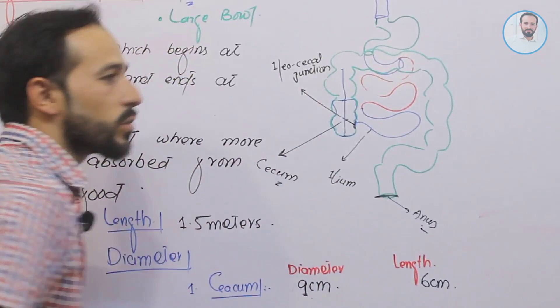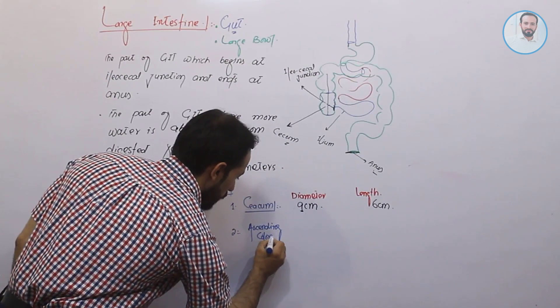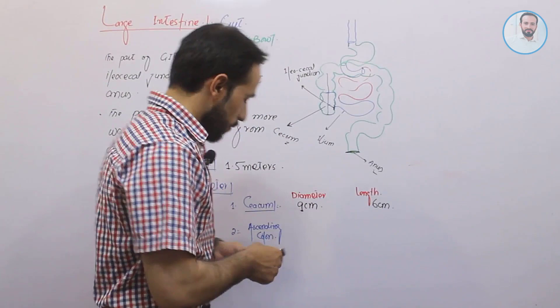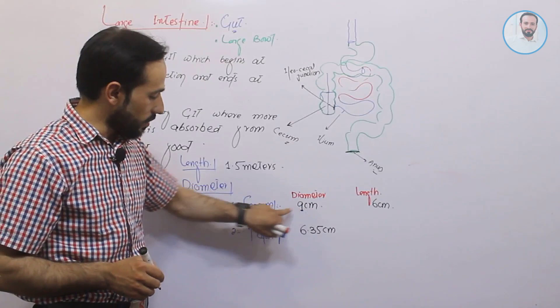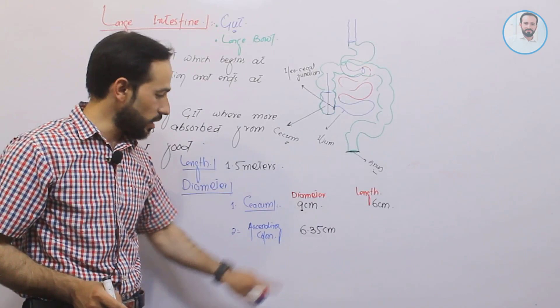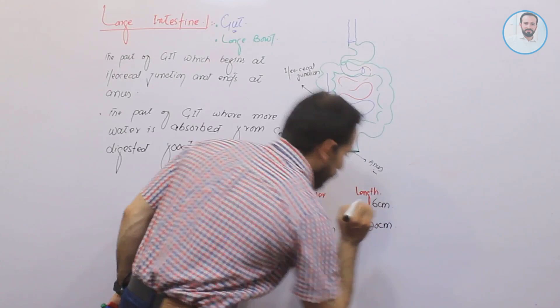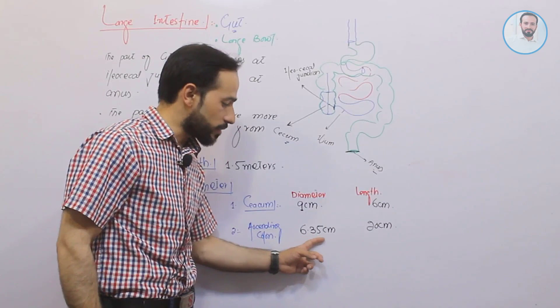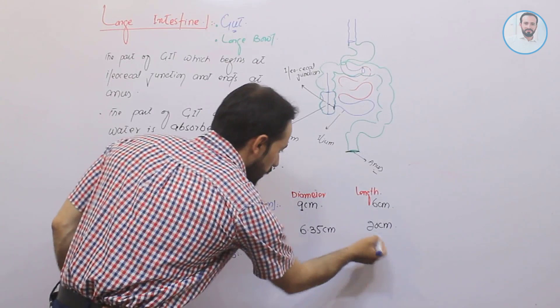The second part is called the ascending colon. Its diameter is about 6.35 centimeters — reduced compared to the cecum — and its length is about 20 centimeters.